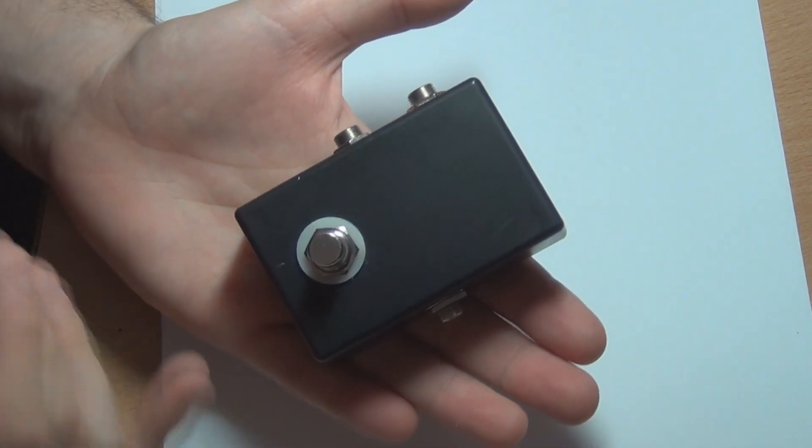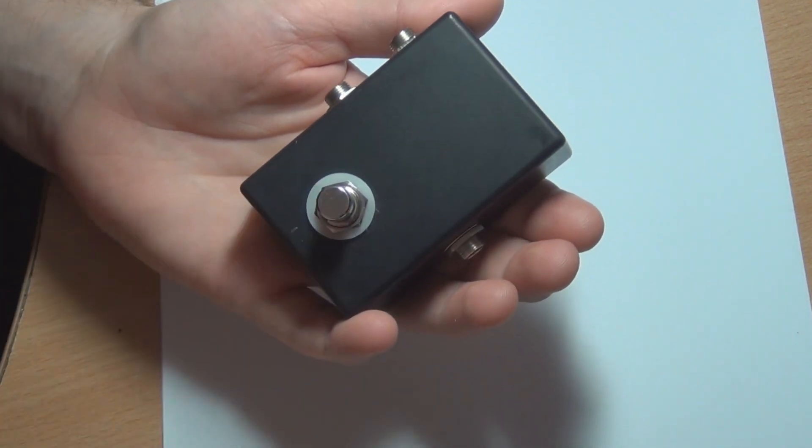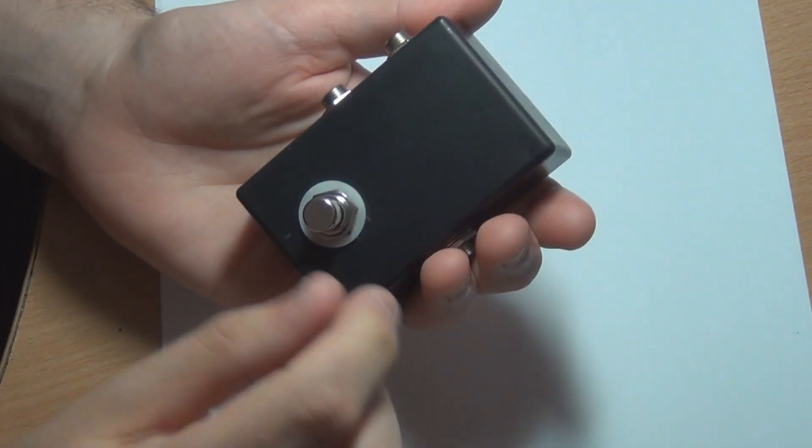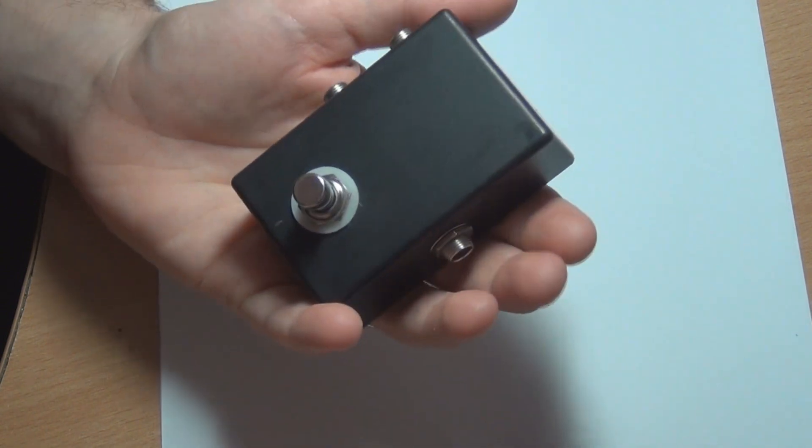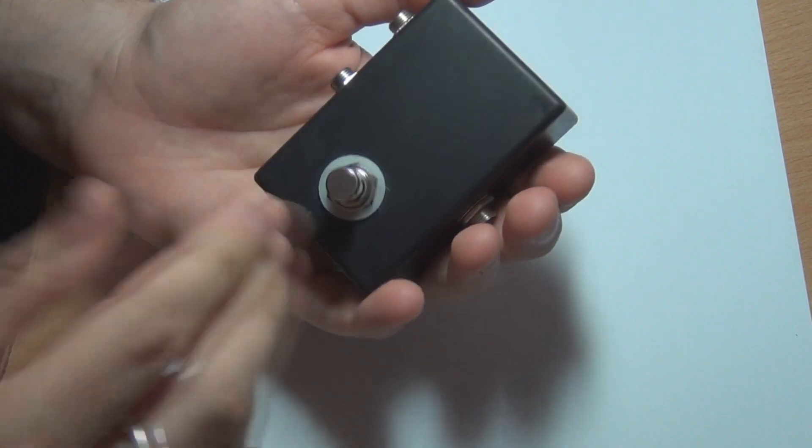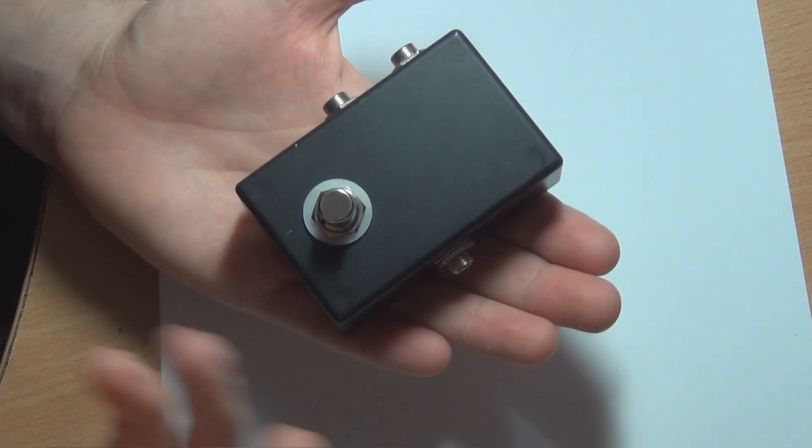You can also use it for comparisons too which is what I use it for. If you've got a Tube Screamer clone and an original for instance you can quickly switch between the two without having to unplug one and plug the other one in or pull your guitar cable out of one and plug it into the other one. You get an instant comparison which makes it much easier to hear subtle differences in tone.